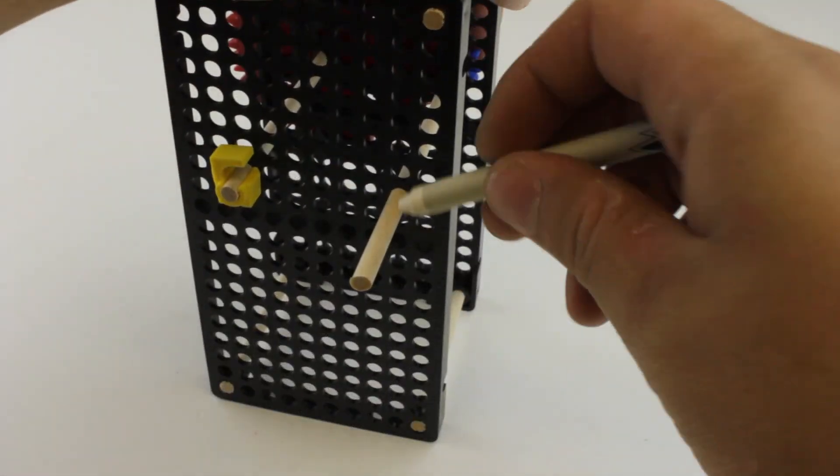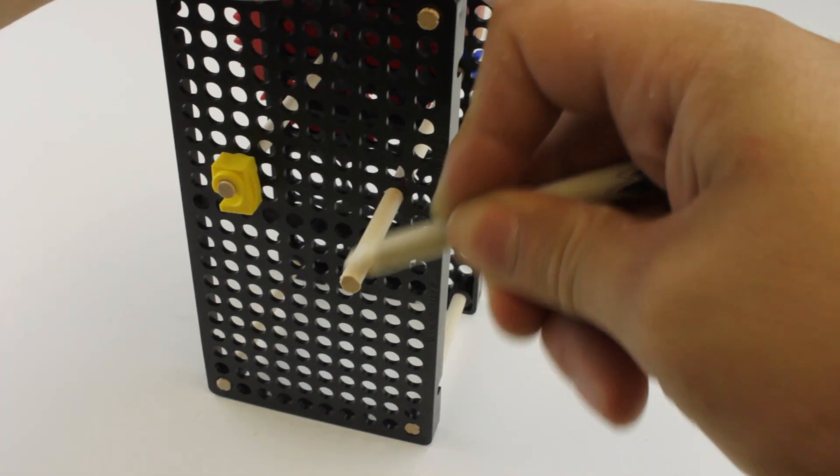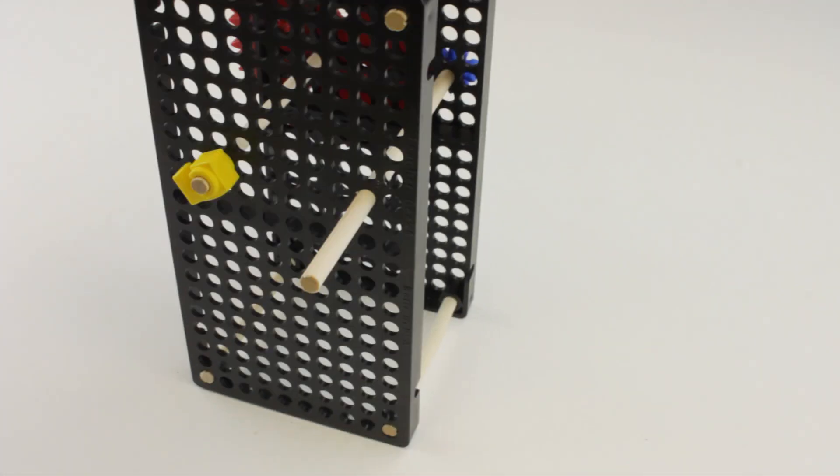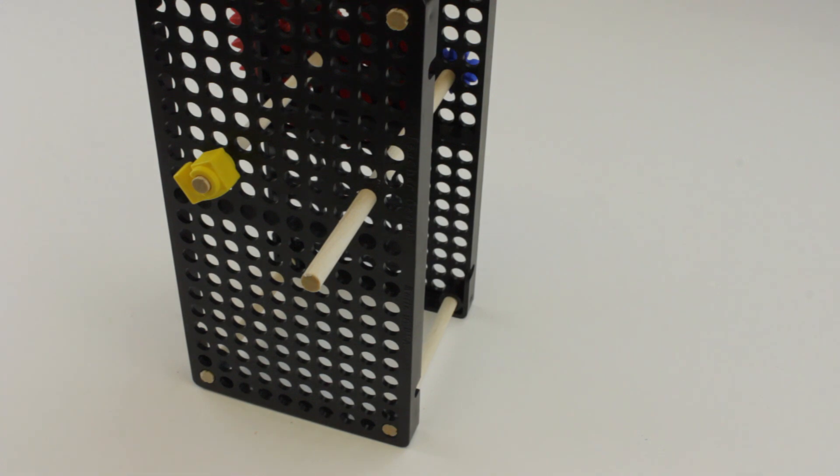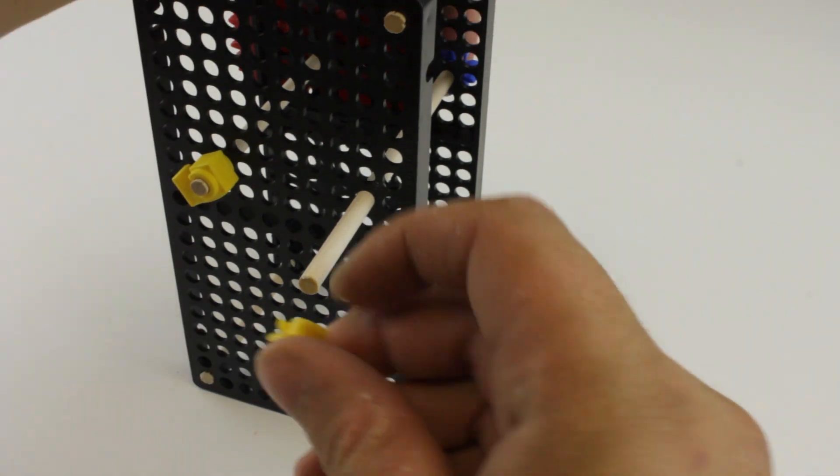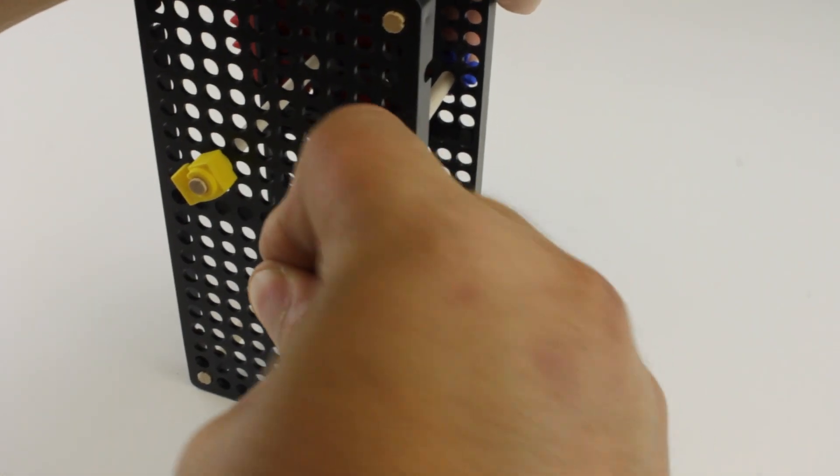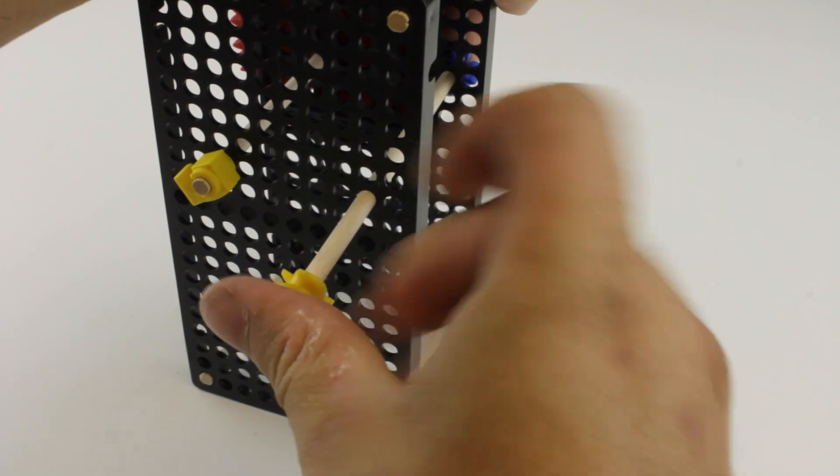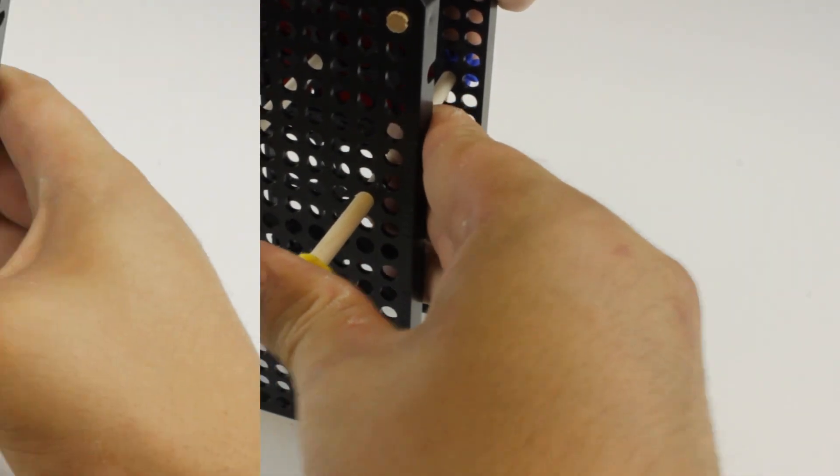Adding wax or some crayon onto the dowel will make getting the pulley on much easier. Push the pulley down on the dowel, but make sure the pulley isn't pinching the hole plates together because you still need that dowel to turn freely.